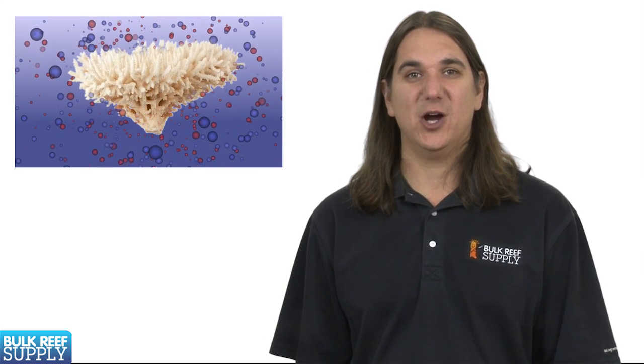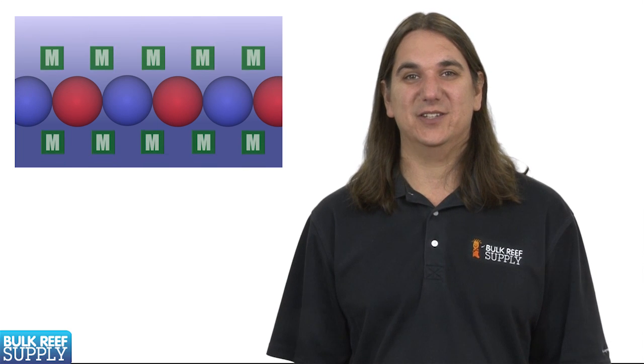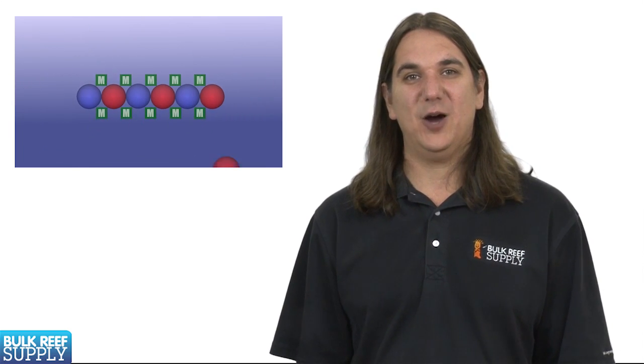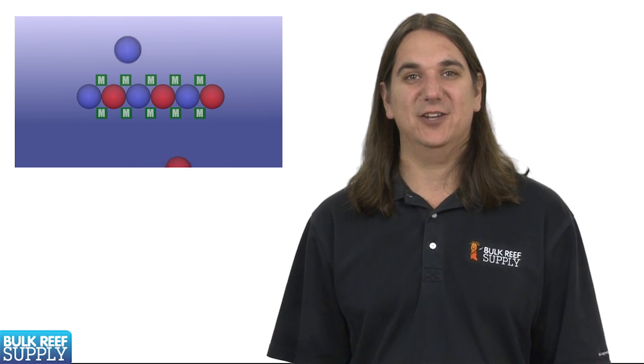That about sums up the basics of calcium and alkalinity in the reef aquarium. To review what we went over today most coral skeletal structures are made up of calcium carbonate. Corals produce this calcium carbonate structure by pulling calcium and carbonate ions from the water. Testing alkalinity gives us a good idea of how much carbonate is available. Magnesium is equally as important because it allows us to maintain high levels of calcium and alkalinity. Without magnesium these elements would find each other and permanently precipitate out of solution.